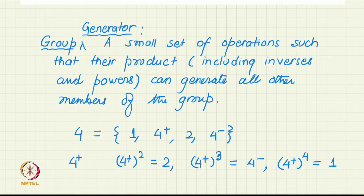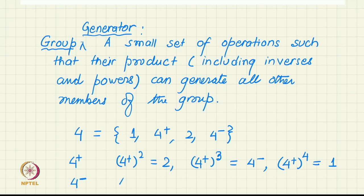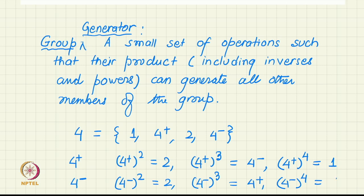The generators of a group are not unique. For example, instead of selecting 4+ (counter-clockwise rotation by 90°), if we select 4− (clockwise rotation by 90°), this will also generate all the operations. For example, 4− squared is 2, 4− cubed gives 4+, and 4− to the power of 4 gives identity. So either 4+ or 4− can be selected as a generator of this group.